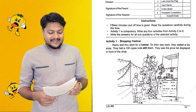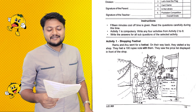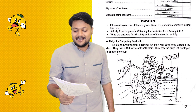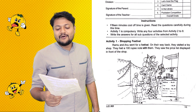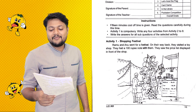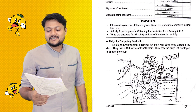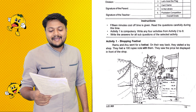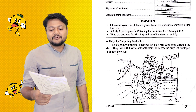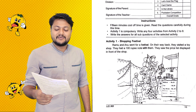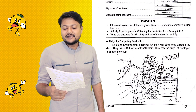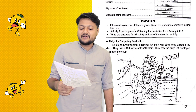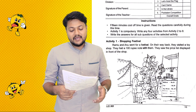Shopping festival. Ramu and Anu went to a festival. On their way back they visited a toy shop. They had a 100 rupee note with them. They saw the price list displayed in front of the shop.